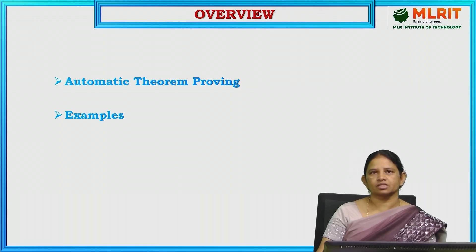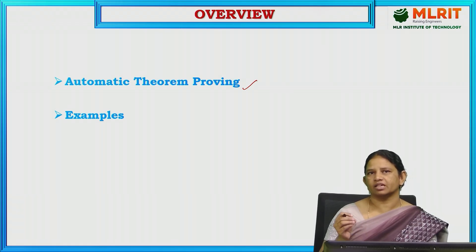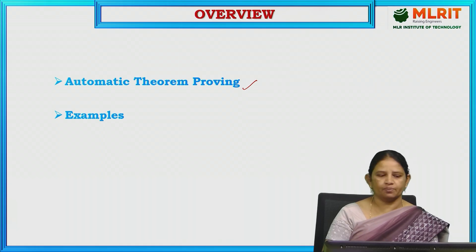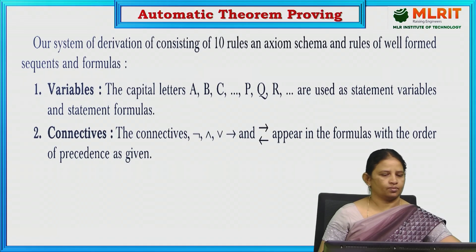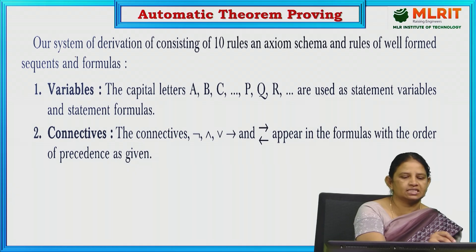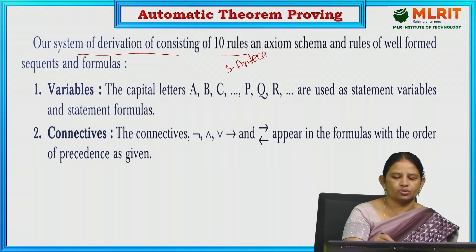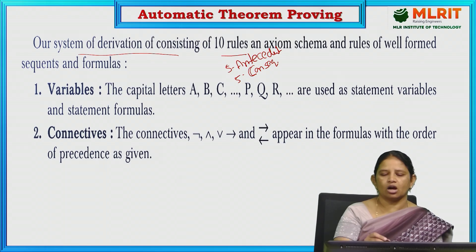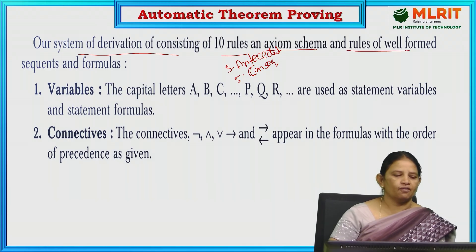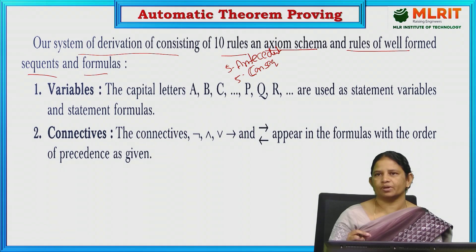Coming to the overview, we are going to discuss about what is meant by automatic theorem proving — what are the rules and regulations for proving whether the given statement or proposition is a theorem or not — and we will understand this topic by taking some examples. Automatic theorem proving is a system of derivation consisting of 10 rules: 5 antecedent rules and 5 consequent rules, totaling 10 rules, along with axiom schema and rules for well-formed formulas, sequences and formulas. Based on all these things we are going to prove that the given statement is a theorem or not.